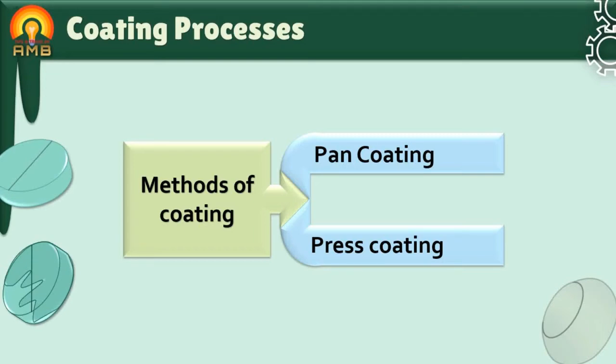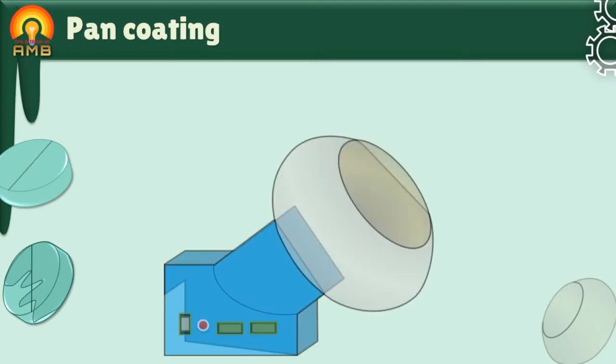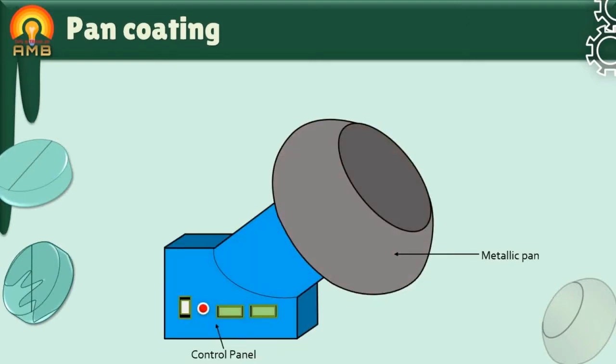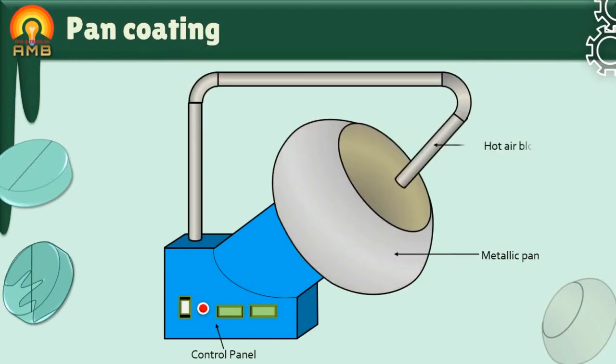First is pan coating. As name indicates, this coating is done in a pan made up of metals like copper or stainless steel. The pan is rotated with the help of an electric motor. The coating pan has an arrangement for introducing hot air in the pan and is also supplied with a spray gun for spraying coating solution.